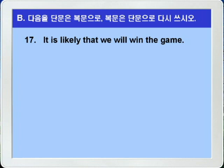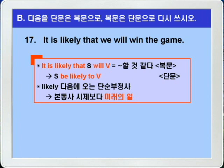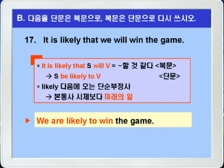17번. 'It is likely that we will win the game.' 우리가 그 경기를 이길 것 같다. 'It is likely that 주어 will 동사원형'은 뭐뭐할 것 같다는 뜻으로, '주어 be likely to 부정사'로 바꿔 쓸 수 있습니다. 이때는 단순부정사를 쓰면 되겠습니다. 정답: 'We are likely to win the game.' 우리는 그 경기를 이길 것 같다.